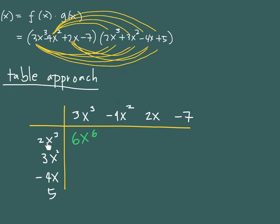Then you move to the second. Then 2x³ and negative 4x² would be a negative 8, that's a 2 and a negative 4. Then x to the 5th. And then just move again to the next term. 2x³ times 2x will be 4x to the 4. And then 2x³ times negative 7 is negative 14x³.